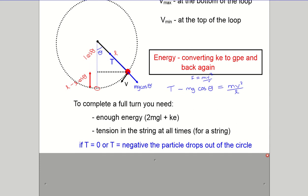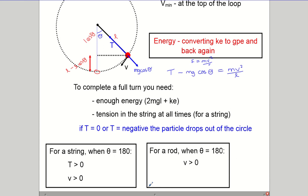That tension condition is only for a string. If it's a rod, you don't have to worry about the tension because a rod is able to push and pull, whereas a piece of string is only able to pull. If the object is on a string, when theta is 180 degrees — at the top of the circle — you need both tension and velocity. If you're on a rod, as long as you've got enough energy to get up there you're fine. Rods are easier to work with than strings generally.